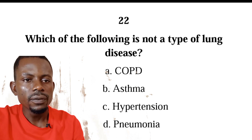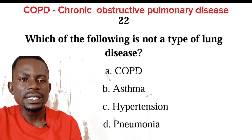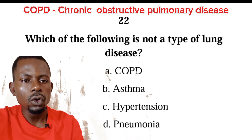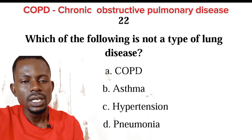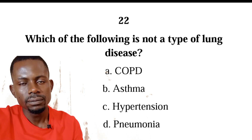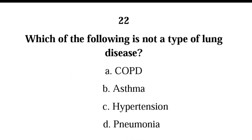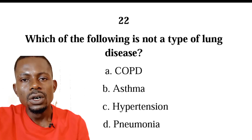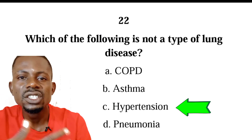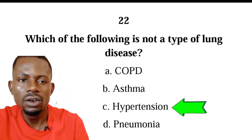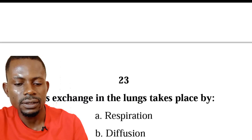Number twenty-two: which of the following is not a type of lung disease? We have COPD, asthma, hypertension, or pneumonia. The correct answer is C, hypertension. Hypertension is not a lung disease — it's a cardiovascular disease.